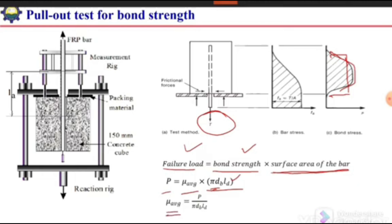From here, after rearranging this equation, we will get the average bond strength is equal to the failure load divided by the surface area of that bar. In this way we can calculate the bond strength of a deformed steel bar embedded in the concrete by using pull-out test.